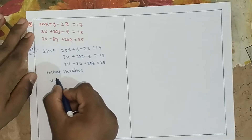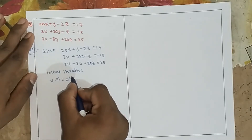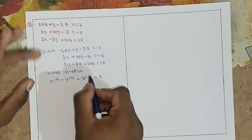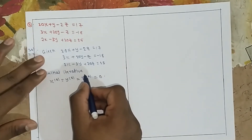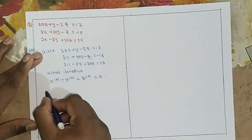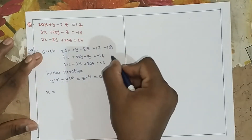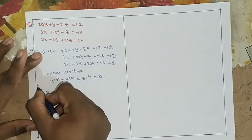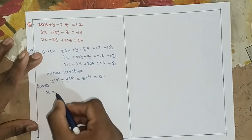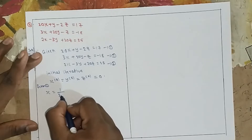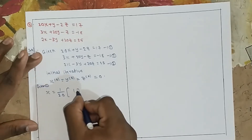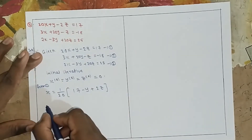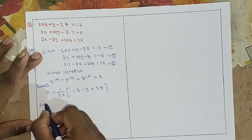For the initial iteration, x(0), y(0), z(0) are all set to 0. From equation 1, we derive: x equals 1 by 20 into (17 minus y plus 2z).